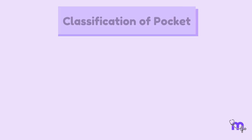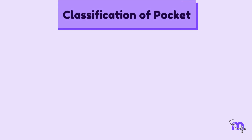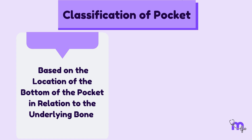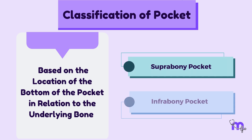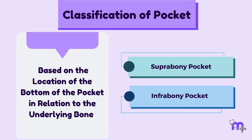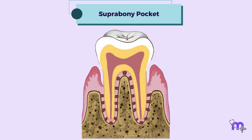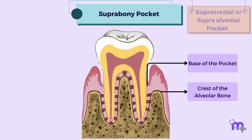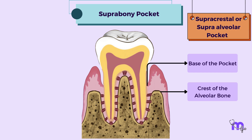Moving on to the classification of pocket. The first classification is based on the location of the bottom of the pocket in relation to the underlying bone. It can be a supra-bony or an infra-bony pocket. In the supra-bony pocket, the bottom of the pocket is above the level of the alveolar bone. It is also called supra-crestal, or supra-alveolar pocket.